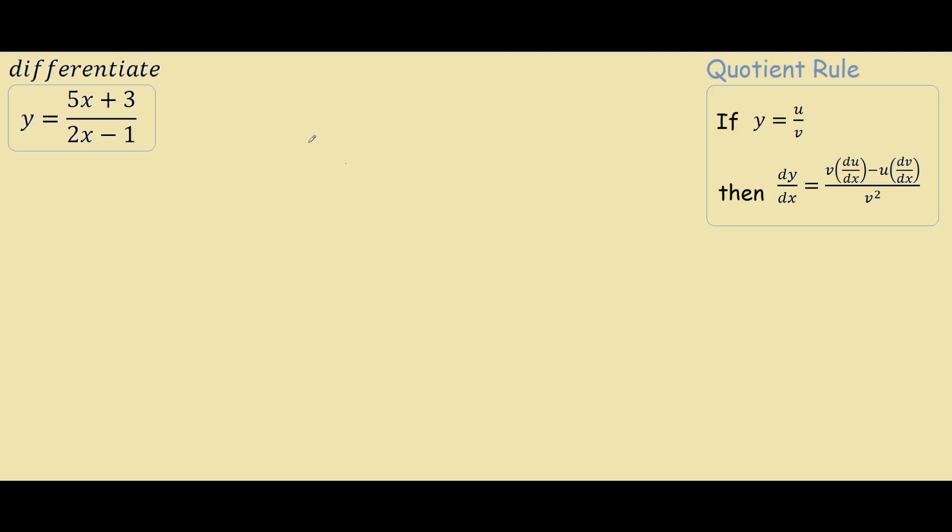So let's begin by letting u equals 5x plus 3 and we let v equals 2x minus 1.